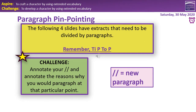On the following four slides, there are extracts that need to be divided by paragraphs. You're going to use the same skills we used in the previous slide. Remember top tip — that's always a really clear one that gives you a clear idea of paragraphing. Annotate your extract with two forward slashes and annotate the reason why you would paragraph at that particular point: is there a change in time, a new person, a new topic, or a different place? Spend between three to five minutes on each one. Your time starts now. Off you go.